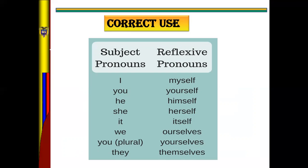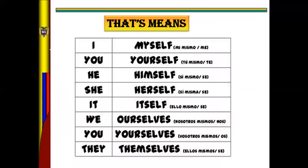For 'you' the reflexive is 'yourself'; 'he' — 'himself'; 'she' — 'herself'; 'it' — 'itself'; 'we' — 'ourselves'; 'you' in plural — 'yourselves'; and 'they' — 'themselves'. So: I — myself, you — yourself, he — himself, she — herself, it — itself, we — ourselves.